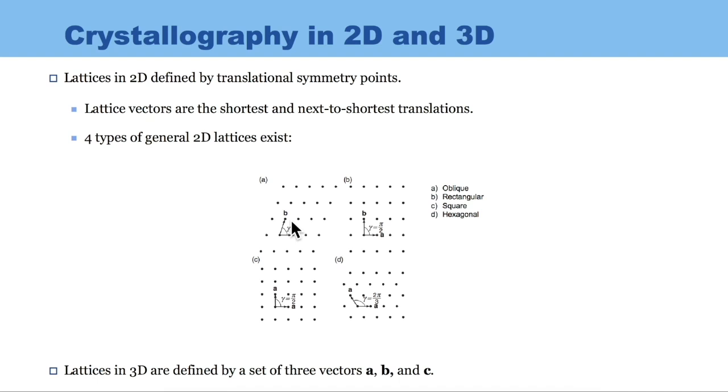Four types of general 2D lattices exist: oblique, rectangular, square, and hexagonal. In an oblique lattice, A and B are different and the angle between them is greater than 90 degrees. In a rectangular lattice, A and B are different and the angle between them is 90 degrees. In a square lattice, A and B are the same and the angle between them is 90 degrees. And in a hexagonal lattice, A and B are the same and the angle between them is 120 degrees.